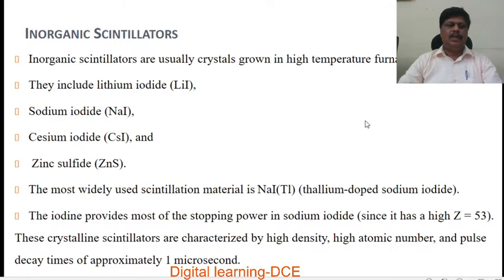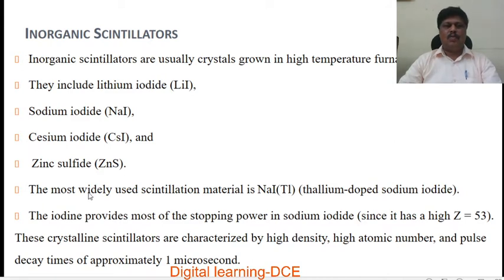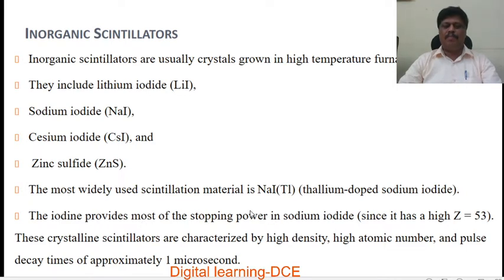What are inorganic scintillators? Inorganic scintillators are usually crystals grown in high temperature furnaces. They include lithium iodide, sodium iodide, cesium iodide, and zinc sulfide. The most widely used scintillation material is thallium-activated sodium iodide crystal, that is thallium-doped sodium iodide. Iodine provides most of the stopping power in sodium iodide since it has a high atomic number — Z is equal to 53.